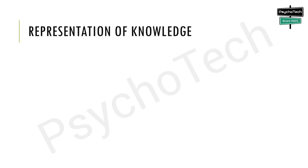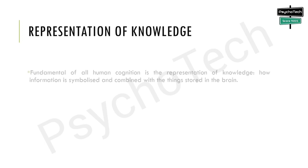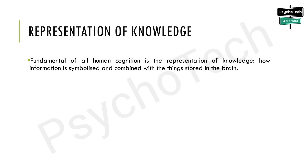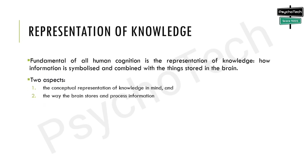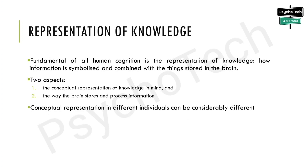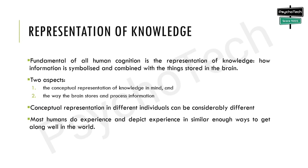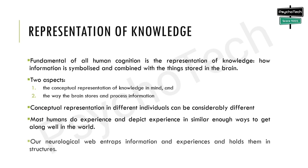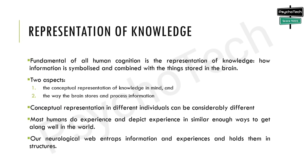Now we'll talk about representation of knowledge, another domain of research in cognitive psychology. Fundamental to all human cognition is the representation of knowledge — how information is symbolized and combined with things stored in the brain. This part of cognition has two aspects: one is the conceptual representation of knowledge in the mind, and the other is the way the brain stores and processes information. Conceptual representation can differ considerably between individuals, yet despite these dissimilarities, most humans experience and depict experiences in similar enough ways. Our neurological web entraps information and experiences and holds them in structures that are similar in all human brains.